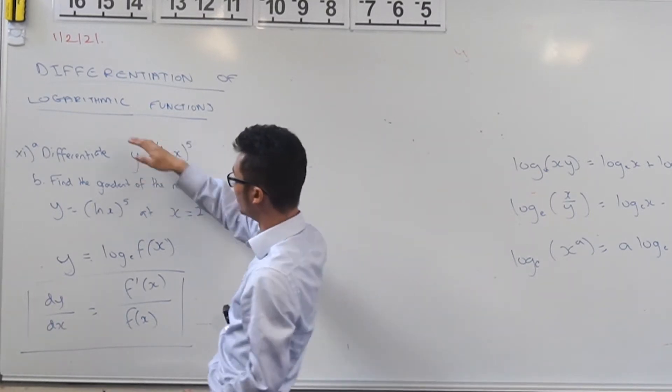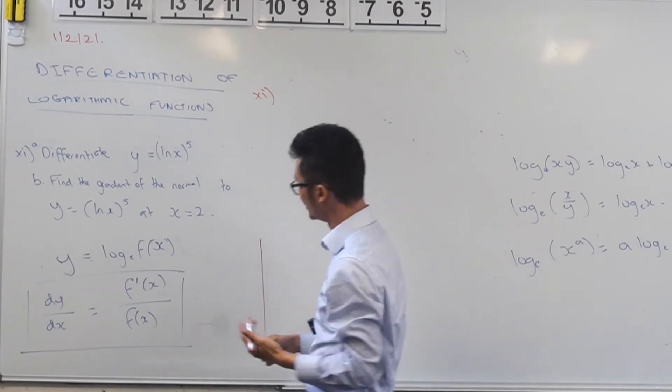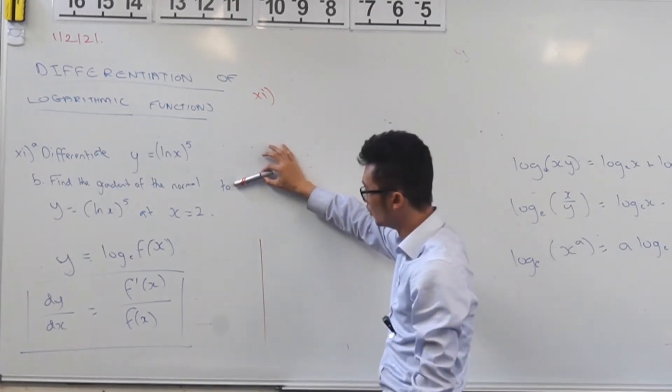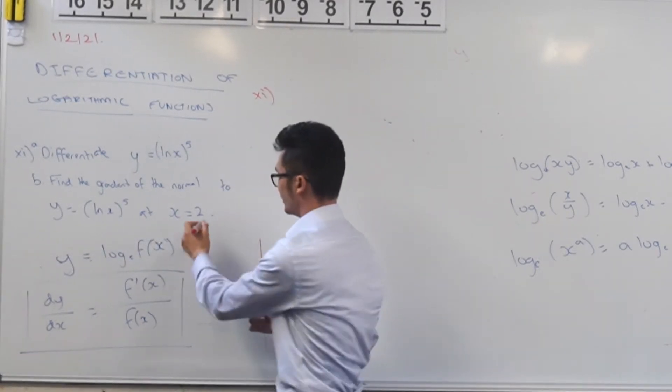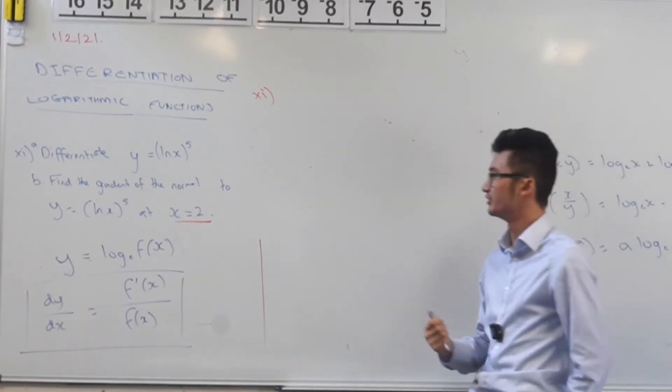So we've got two parts here and the first part is a differentiation, we can do that in a second, and then this one over here we want to find the gradient of the normal at this particular x value. So get a bit of a sense of what the question is actually asking before you jump into it.